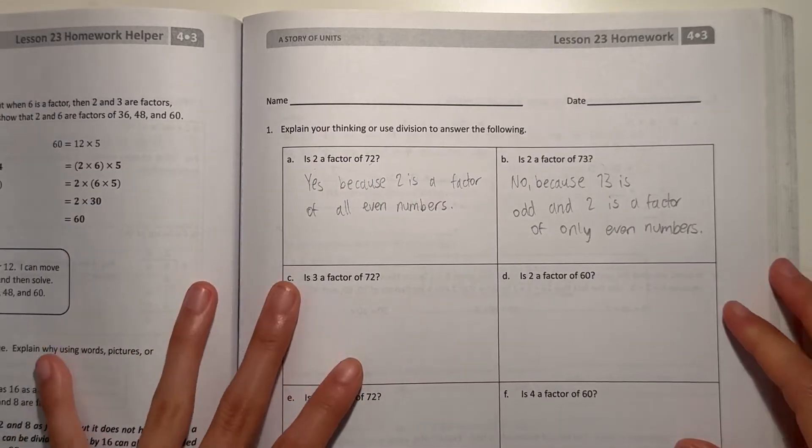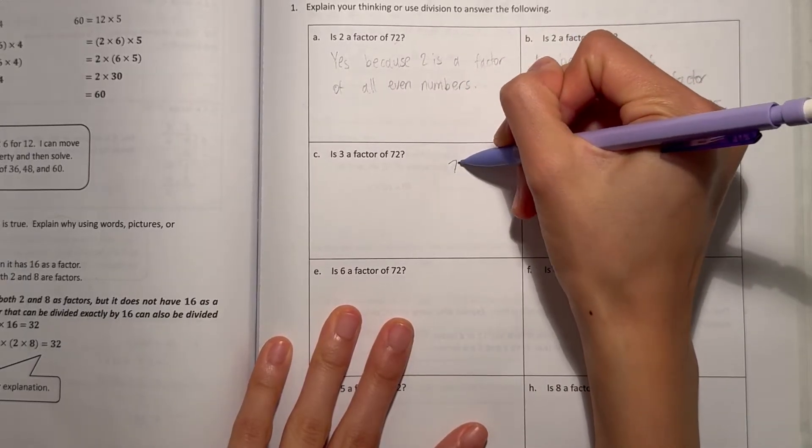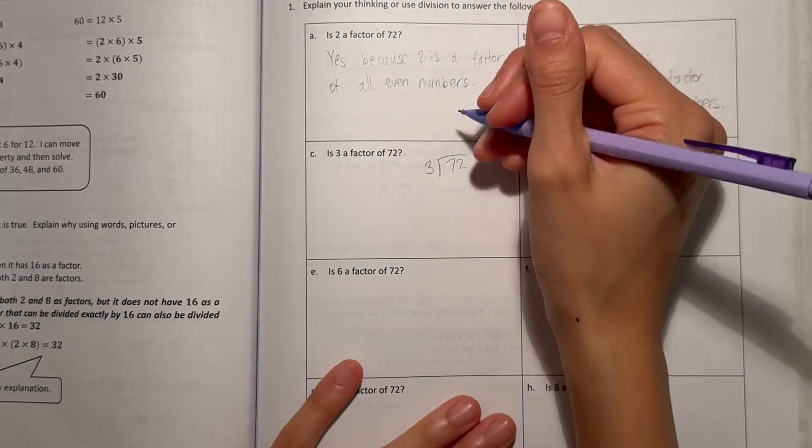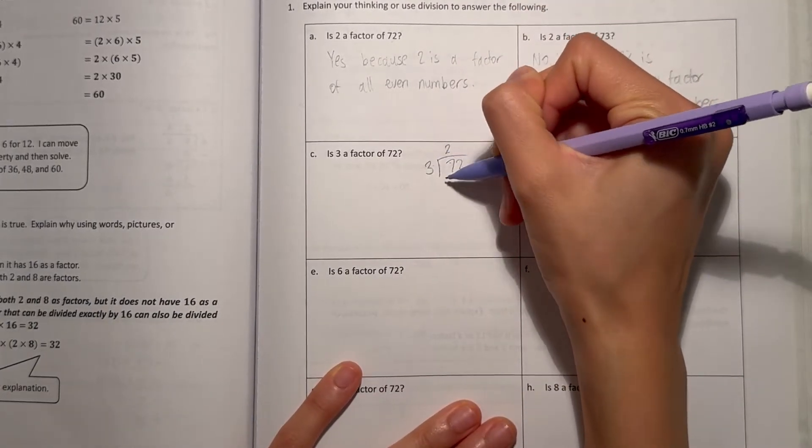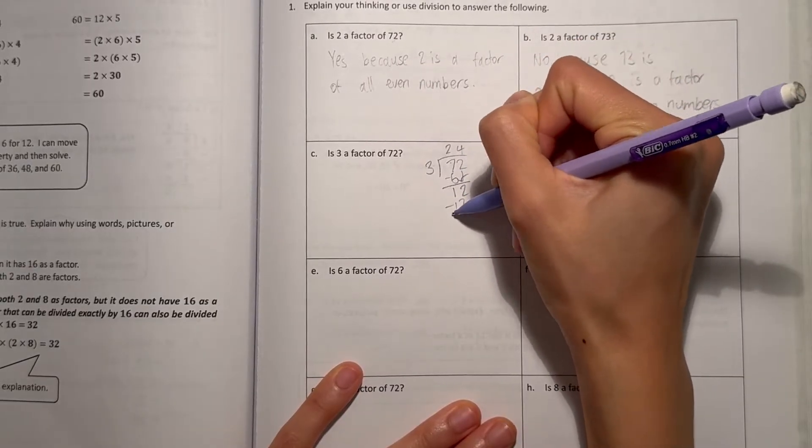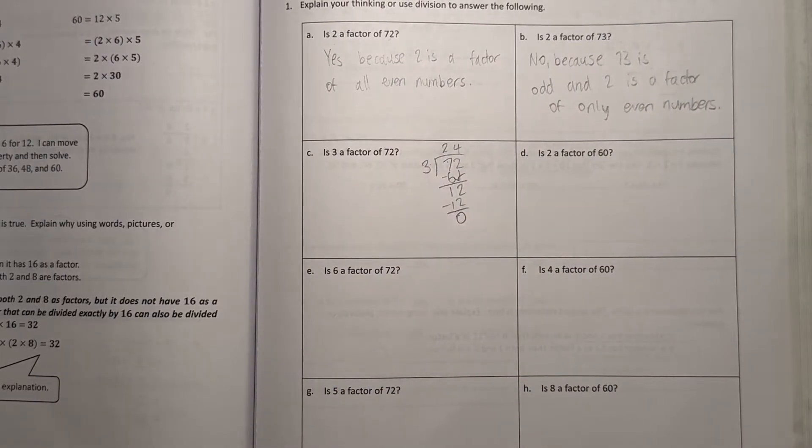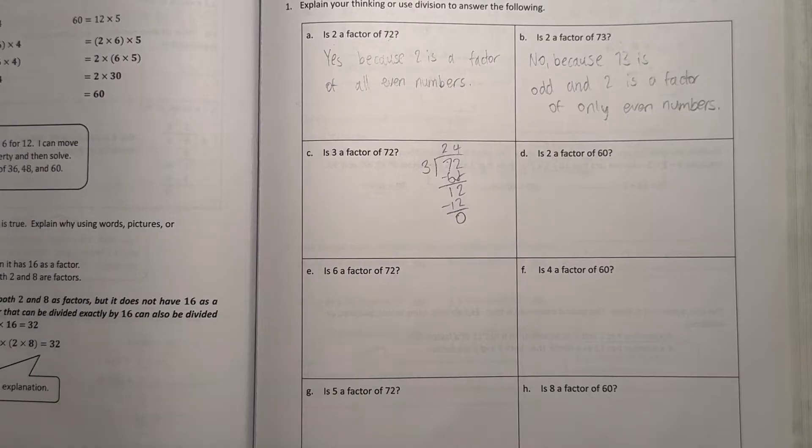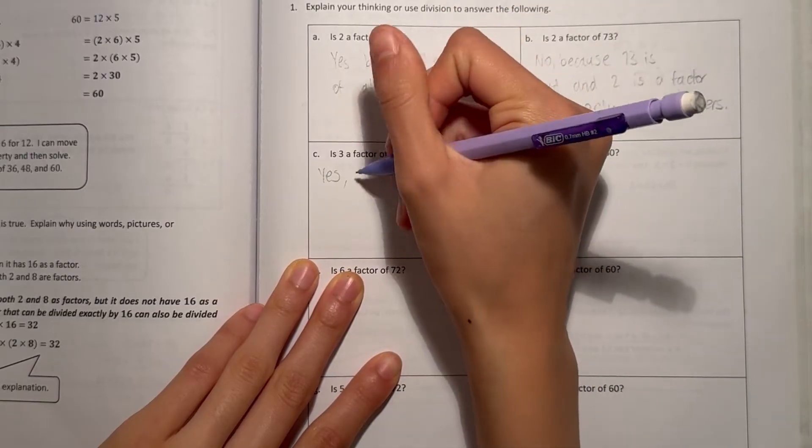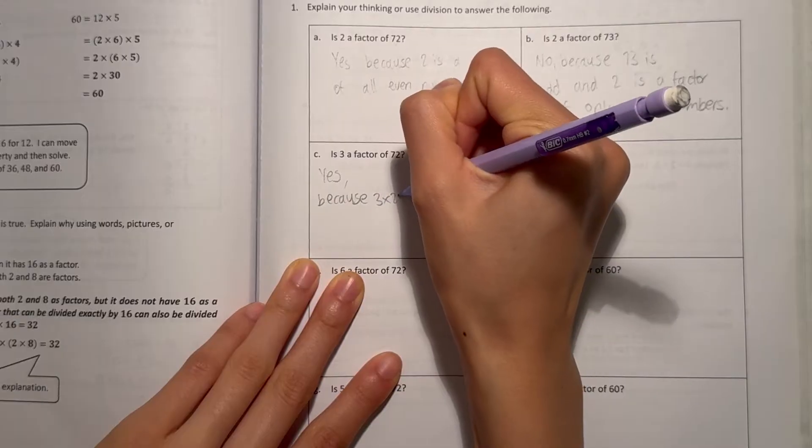C says, is 3 a factor of 72? Well, let's see, let's check by doing long division. 72 divided by 3, and if 3 goes in without any remainders, that means it's a factor. 3 goes into 7, 2 times, minus 6, bring down the 2. 3 goes into 12, 4 times, with 0 left over. So we don't have a remainder. So 3 goes into 72, 24 times, which means yes, 3 is a factor. Yes, because 3 times 24 is 72.